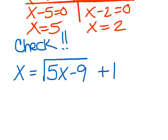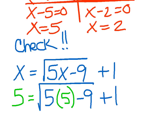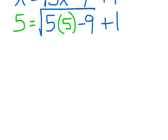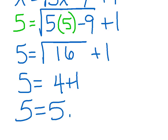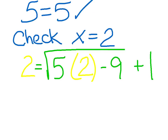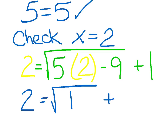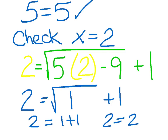Two answers means two checks. Start with the 5 — replace every x in the problem with a 5. So 5 equals the square root of 5 times 5 minus 9, plus 1. That gives me 5 equals the square root of 16 plus 1, so 5 equals 4 plus 1 — yes, 5 equals 5, that checks. Now for x equals 2: 2 equals the square root of 10 minus 9, plus 1. The square root of 1 is 1, so 1 plus 1 gives 2 equals 2, which checks again.